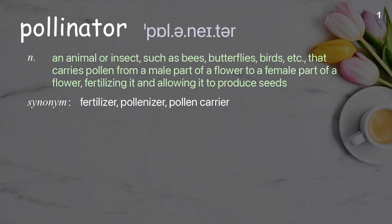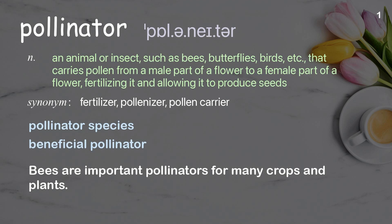Pollinator: An animal or insect, such as bees, butterflies, birds, etc., that carries pollen from a male part of a flower to a female part of a flower, fertilizing it and allowing it to produce seeds. Examples: Pollinator Species, Beneficial Pollinator. Bees are important pollinators for many crops and plants.